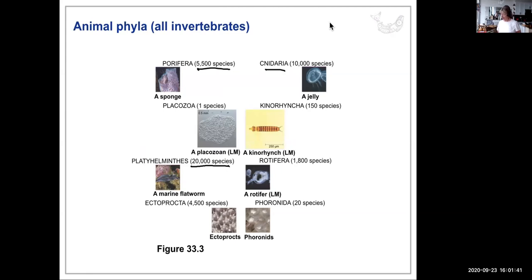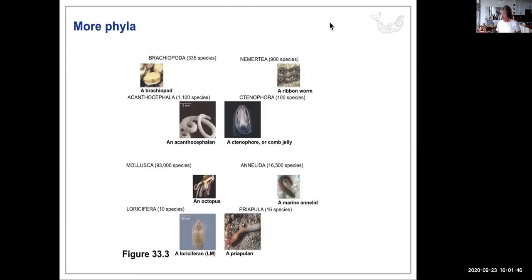There's also Ectoprocta and Phoronida, which I don't know much about. Brachiopoda are marine with not too many species. Nemertea — the ribbon worms — about 900 species; we have them on our coast too. Ctenophora (comb jellies) are quite common, with only about 100 species.